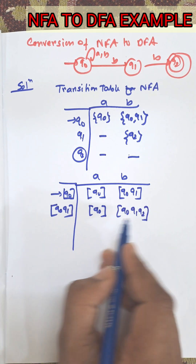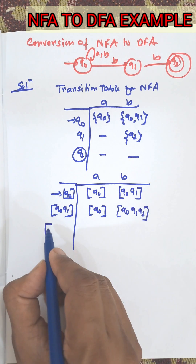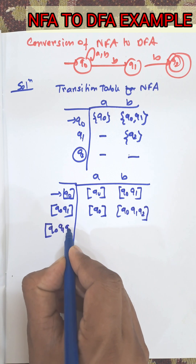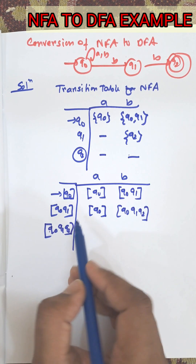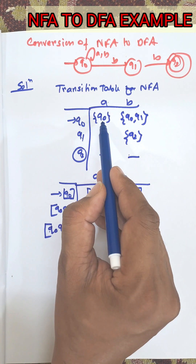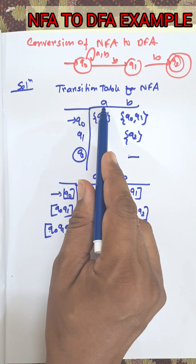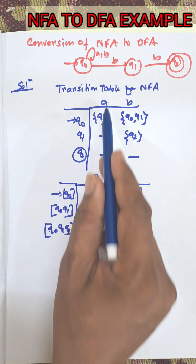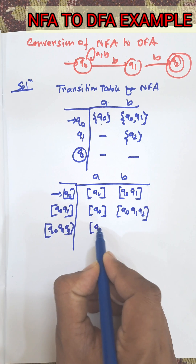Now {Q0, Q1, Q2} is a new state, so we need to put it as input of the DFA. From {Q0, Q1, Q2} on input A: Q0 on A gives Q0, Q1 on A gives empty, and Q2 on A gives empty. So the union is Q0.